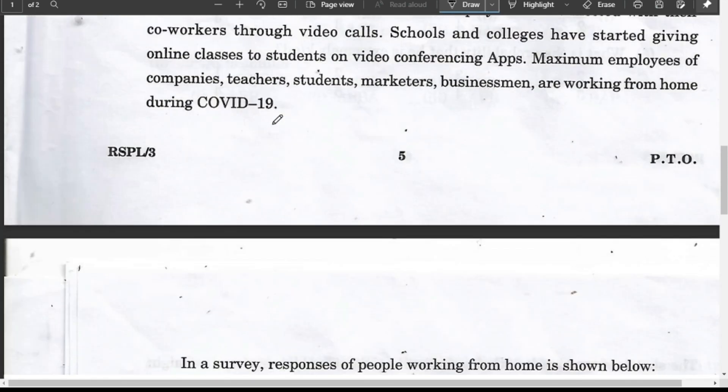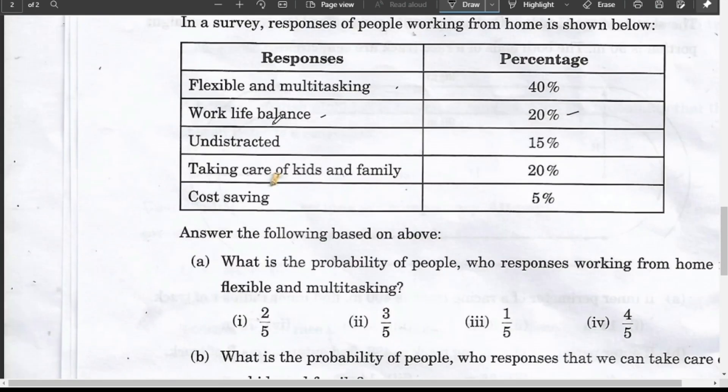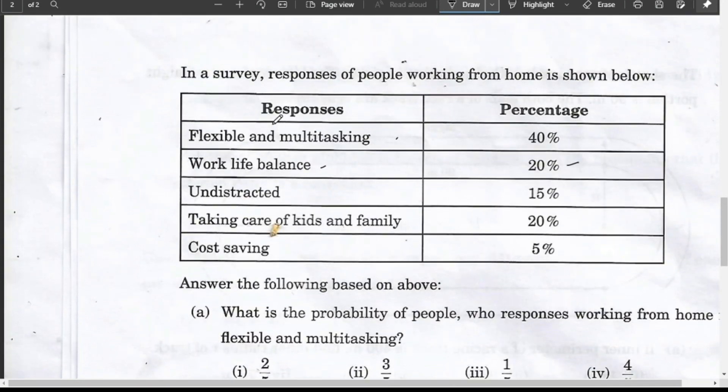The main part of this question has a table which shows the responses, given in percentage. These are the categories which they have made, and along with that the data has been given.